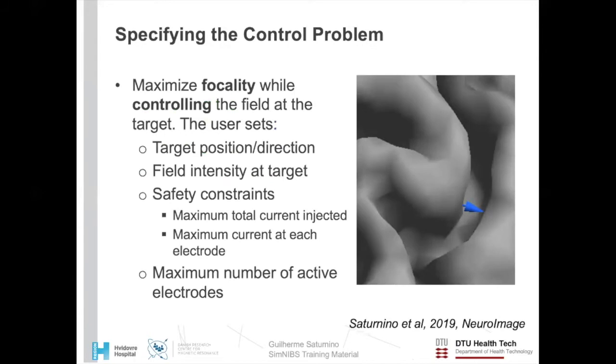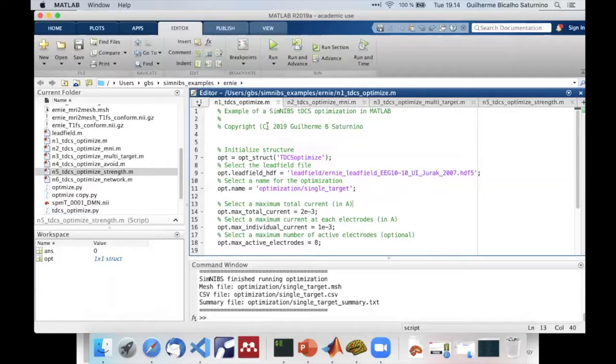Now we can turn our attention to specifying the optimization problem. With the exception of the network optimization that I'll talk about later, SimNIBS uses a target-control formulation for the optimization problem. This means that the user sets a target position and direction, such as shown here on the right-hand side. By default, SimNIBS uses the normal direction, that is, the electric field component that is entering or leaving the cortex. Axel talks more about it in the first part of the series. The user also needs to give the desired field intensity at the target, such as 0.2 volts per meter, safety constraints—that is, how much current we can inject both in total as well as through each electrode—and a maximum number of electrodes, which means the number of channels in our potential TES system.